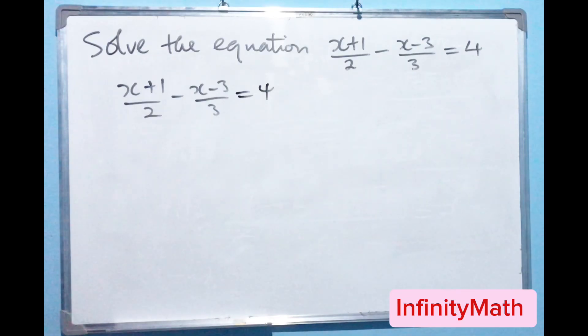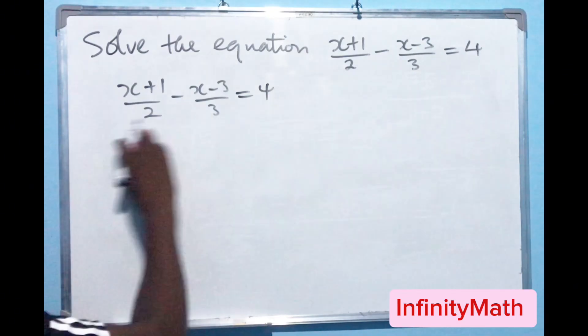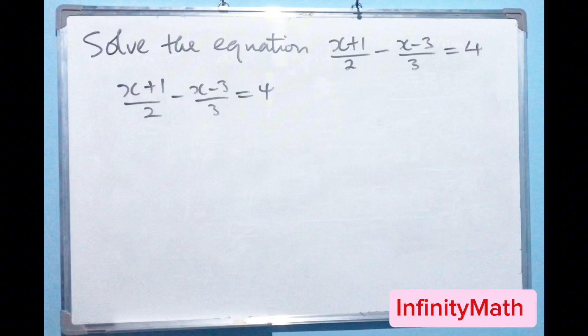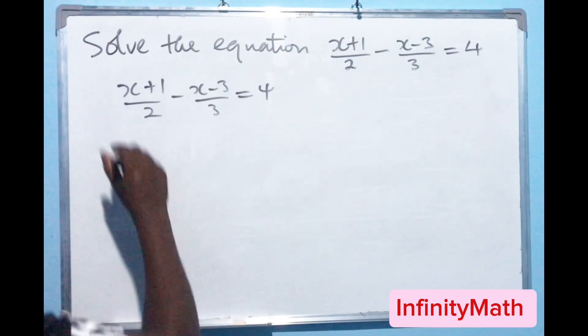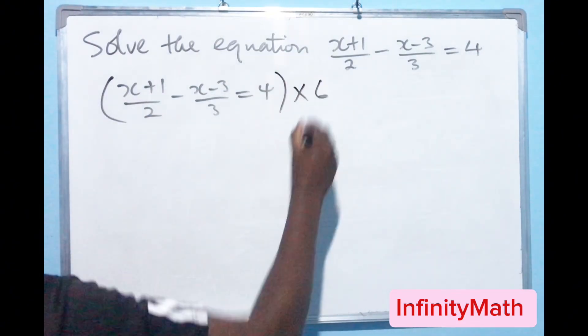So what we can do here is just to multiply the entire thing with 6. We can multiply the entire thing with 6, so we can do this and just multiply by 6.